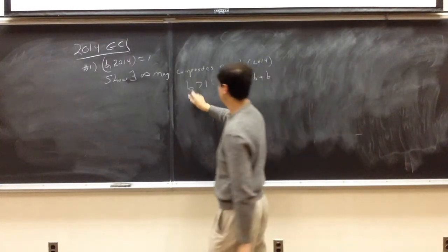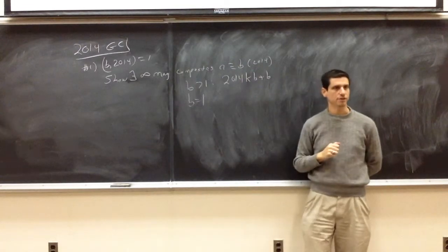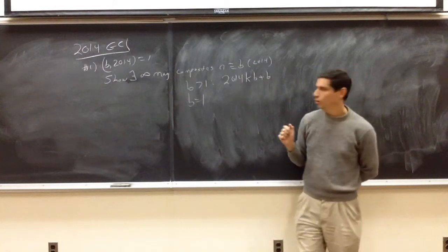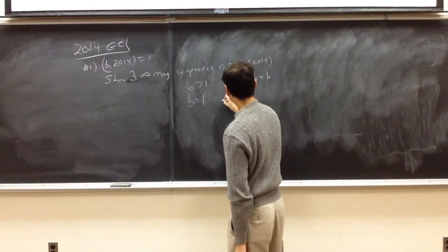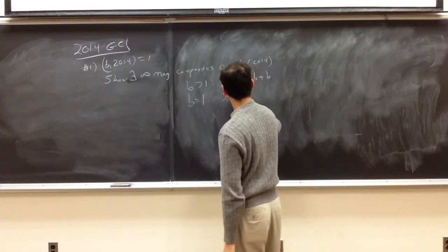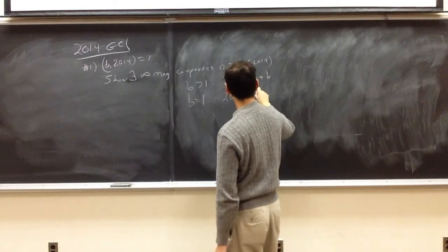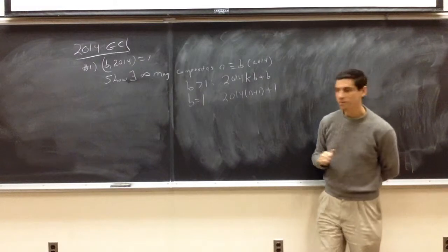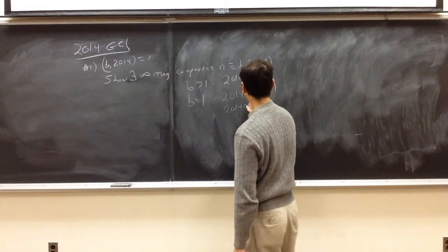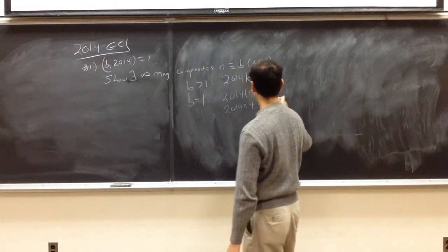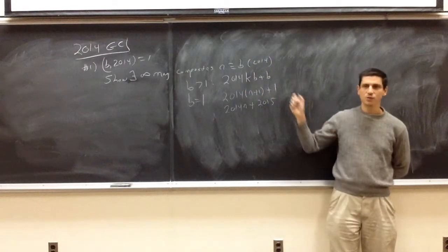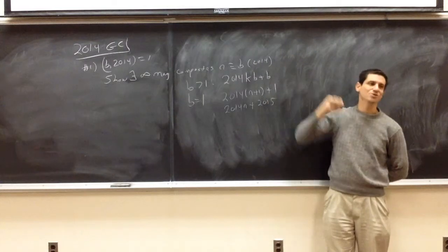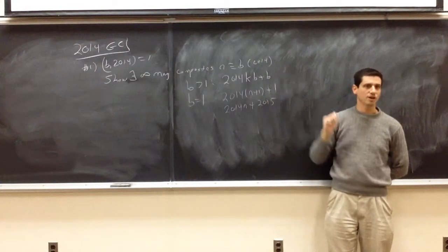If B equals 1, you have to be a little bit more careful. In the solution key I gave out, there are ways of attacking this. One possibility is to look at 2014 N plus 1 plus 1. And now all numbers of this form have the form 2014 N plus 2015. And so now we've just replaced the number B with the number 2015, and we can use the argument from before.